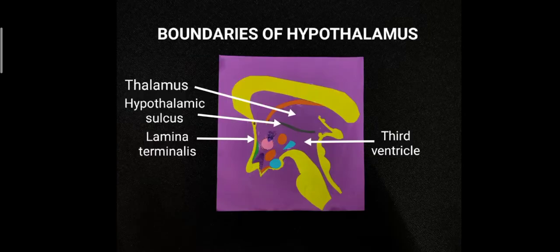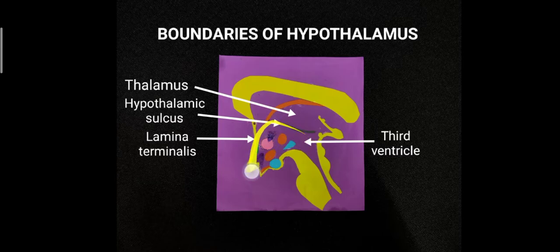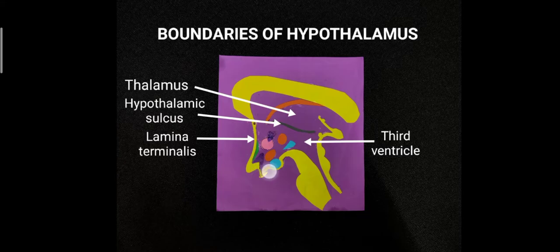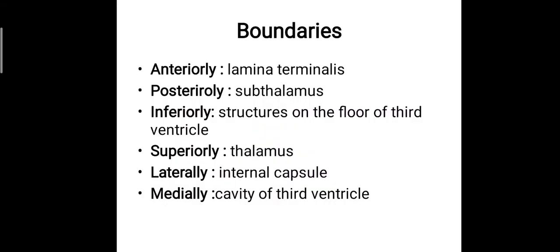You can see the boundaries here: anteriorly the lamina terminalis, medially the third ventricle wall — this is the hypothalamus region below the hypothalamic sulcus — and superiorly the thalamus coming over the hypothalamus. You can also see the optic chiasma. To repeat: anteriorly by the lamina terminalis, posteriorly by the subthalamus, inferiorly by the structures on the floor of the third ventricle, superiorly the thalamus, laterally the internal capsule, and medially by the cavity of the third ventricle.